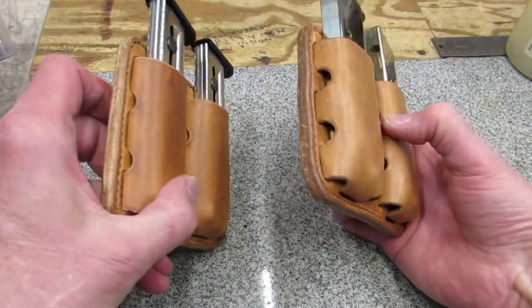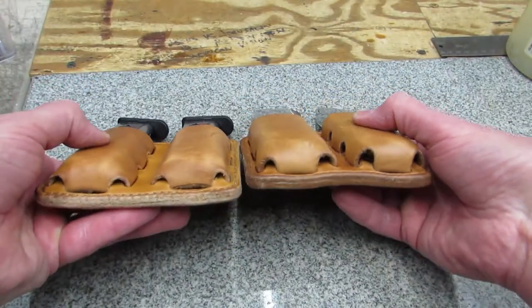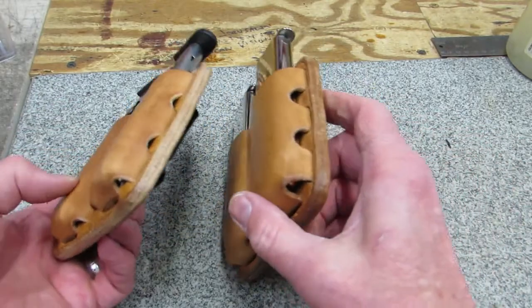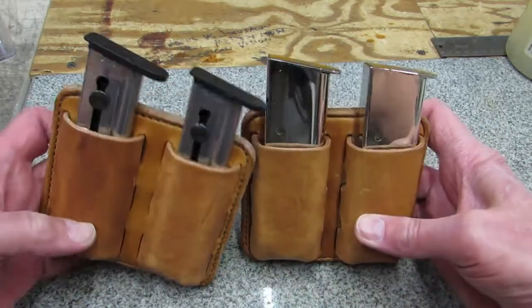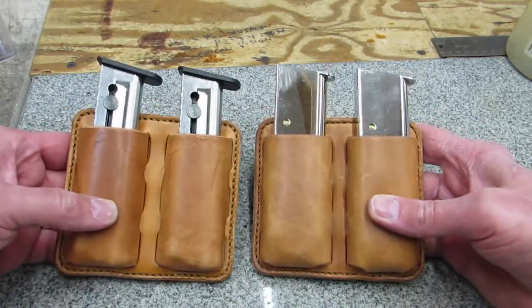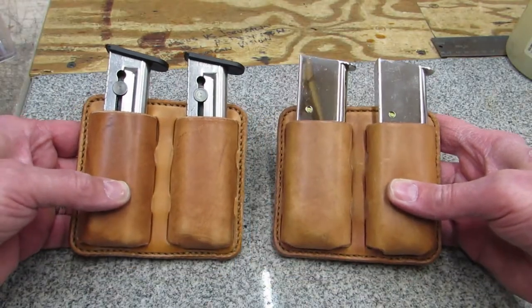As a side-by-side comparison of mag pouches made for two different calibers with the same pattern components, we have the 22 caliber mag pouches on the left and the 45 on the right.